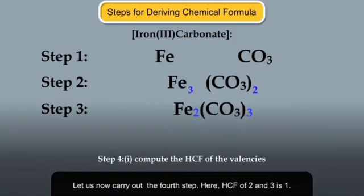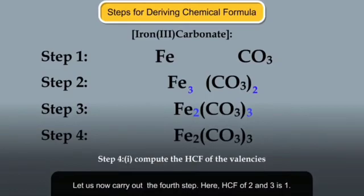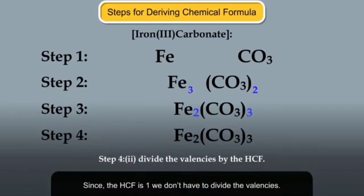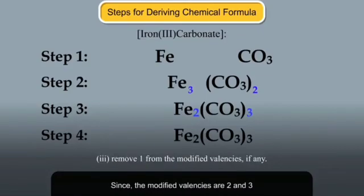Let us now carry out the fourth step. Here HCF of 2 and 3 is 1. Since the HCF is 1, we don't have to divide the valencies. Even if you do the division, nothing happens. Can you tell why this is so? Since the modified valencies are 2 and 3, we let them be as they are.